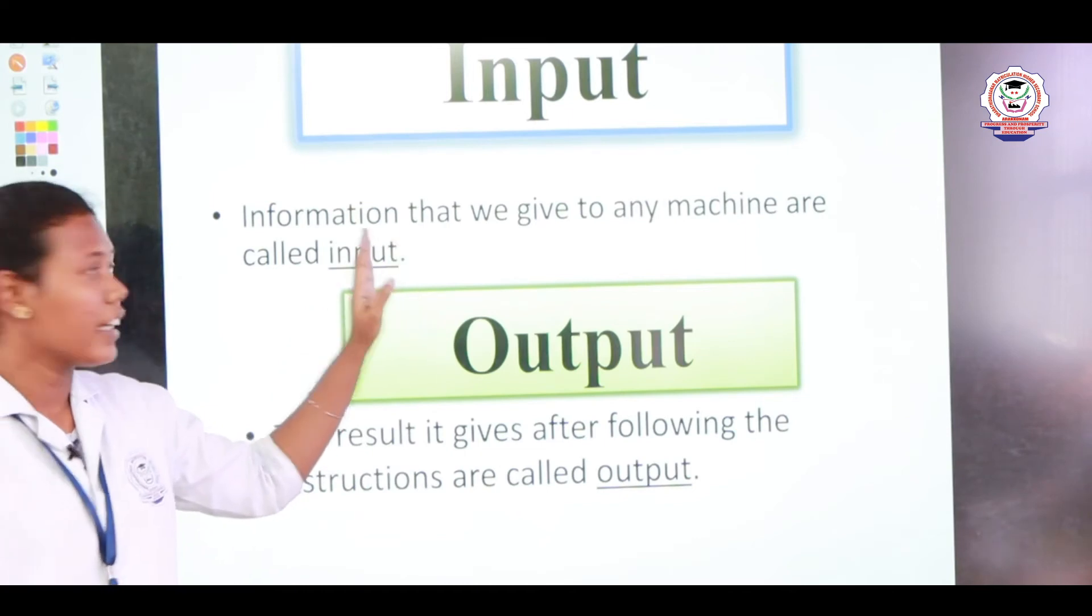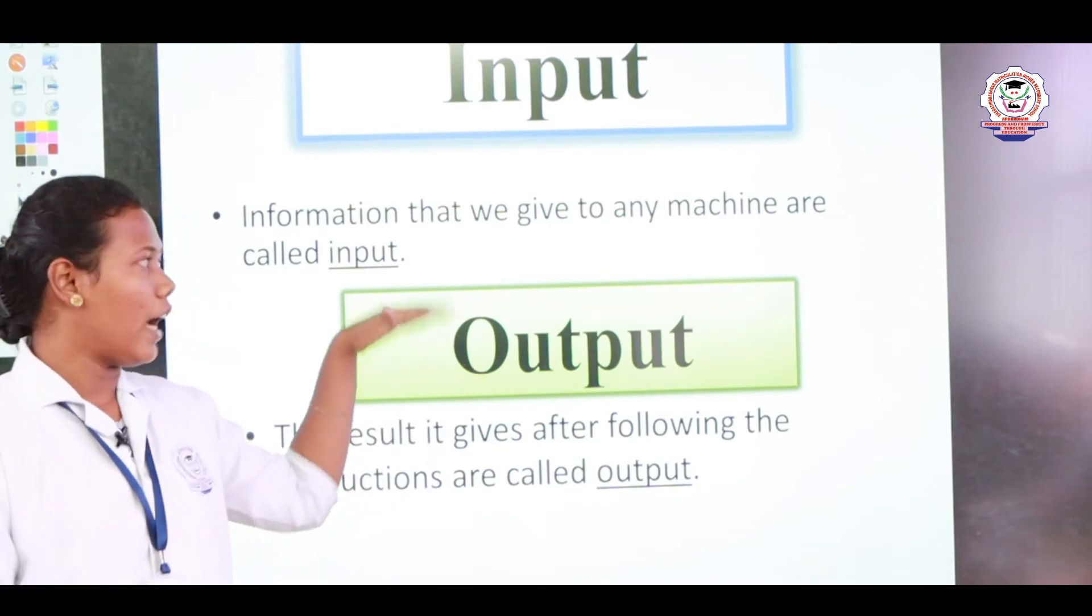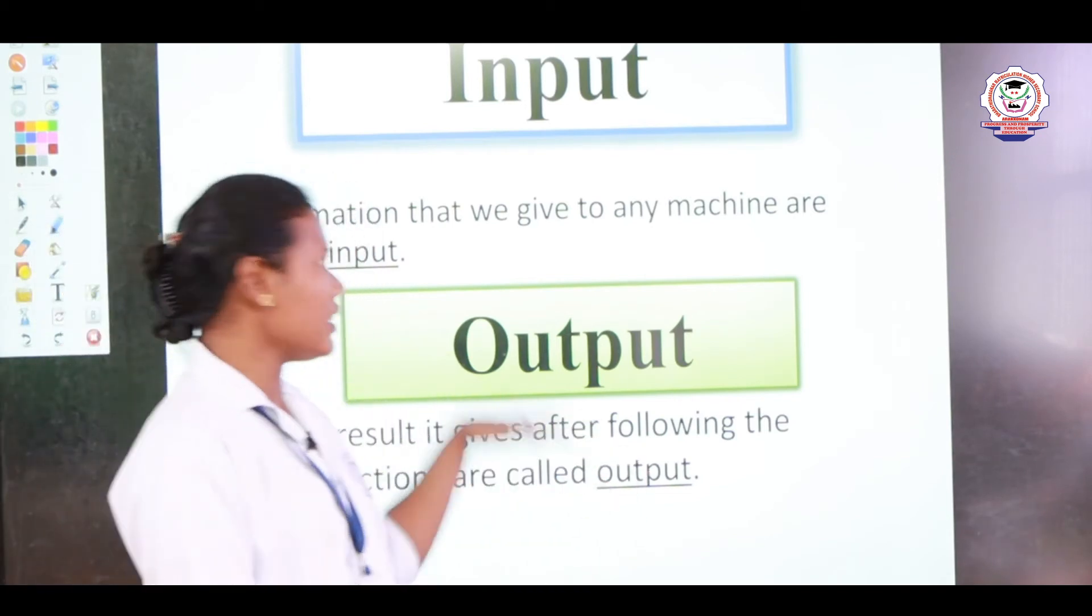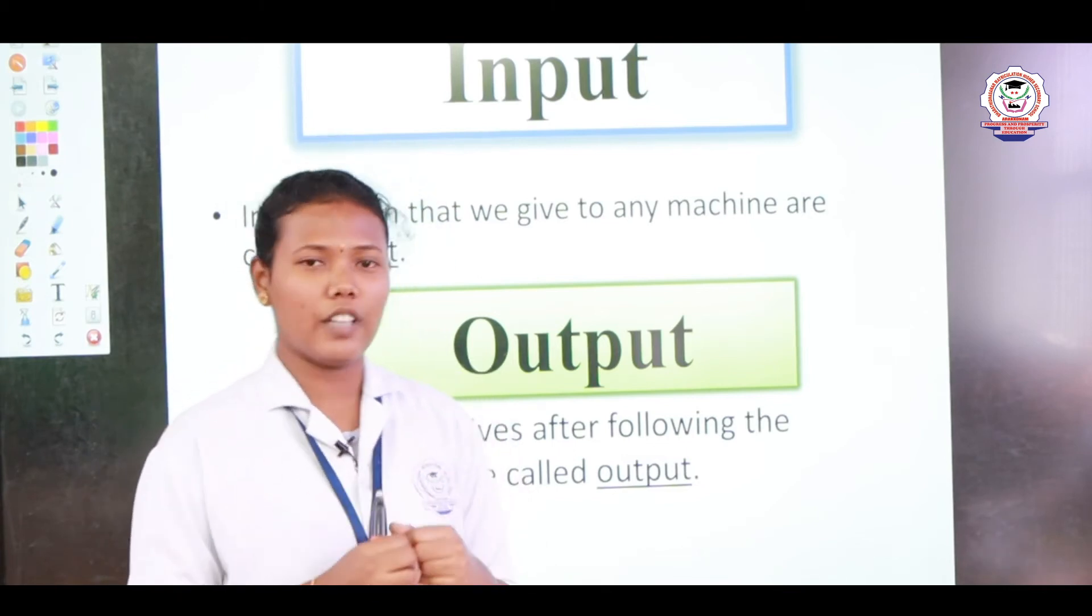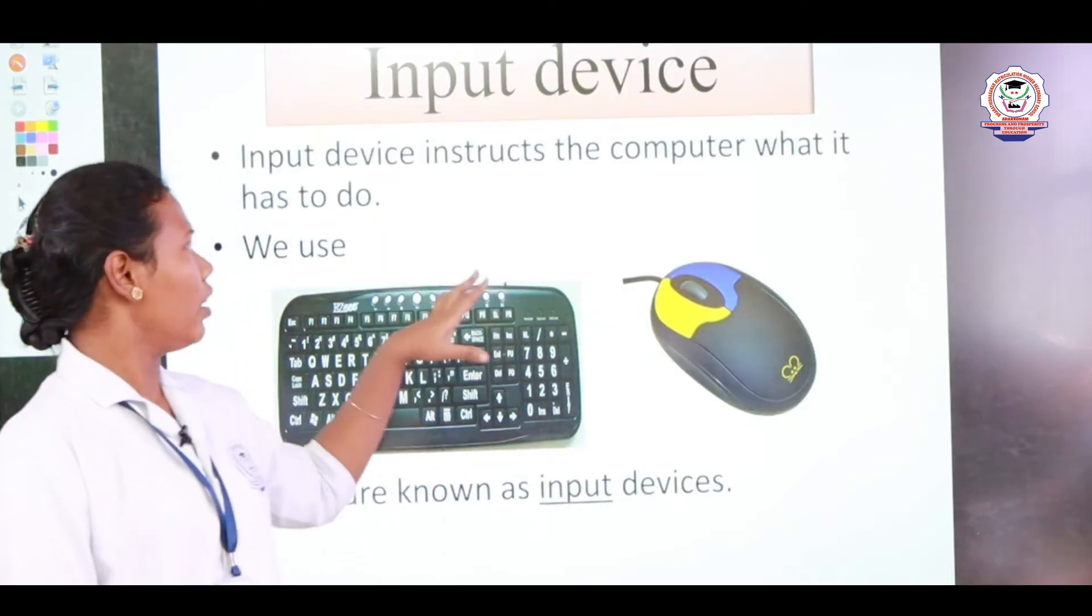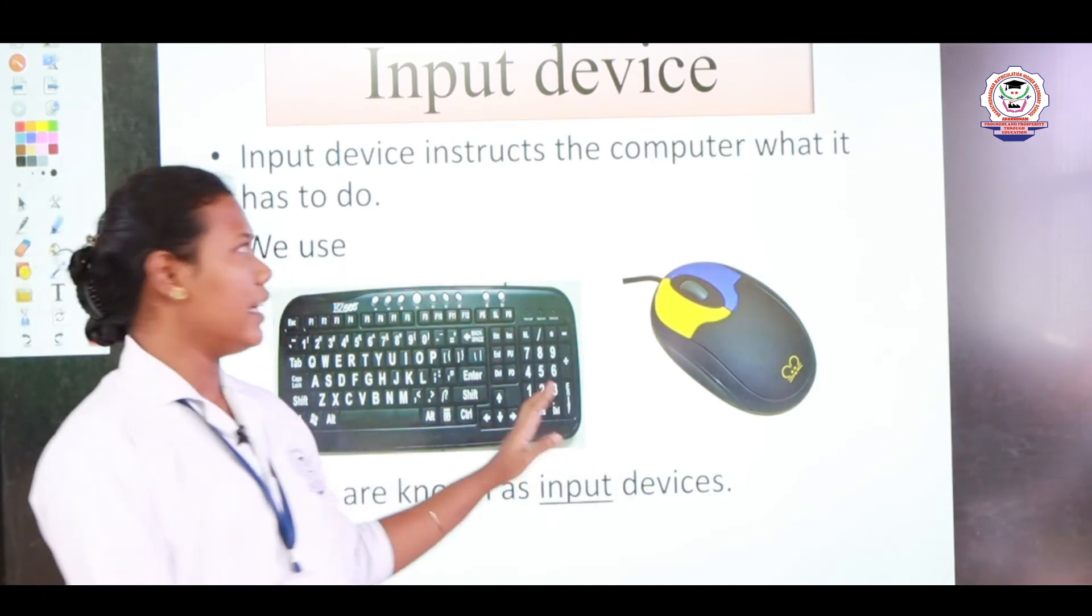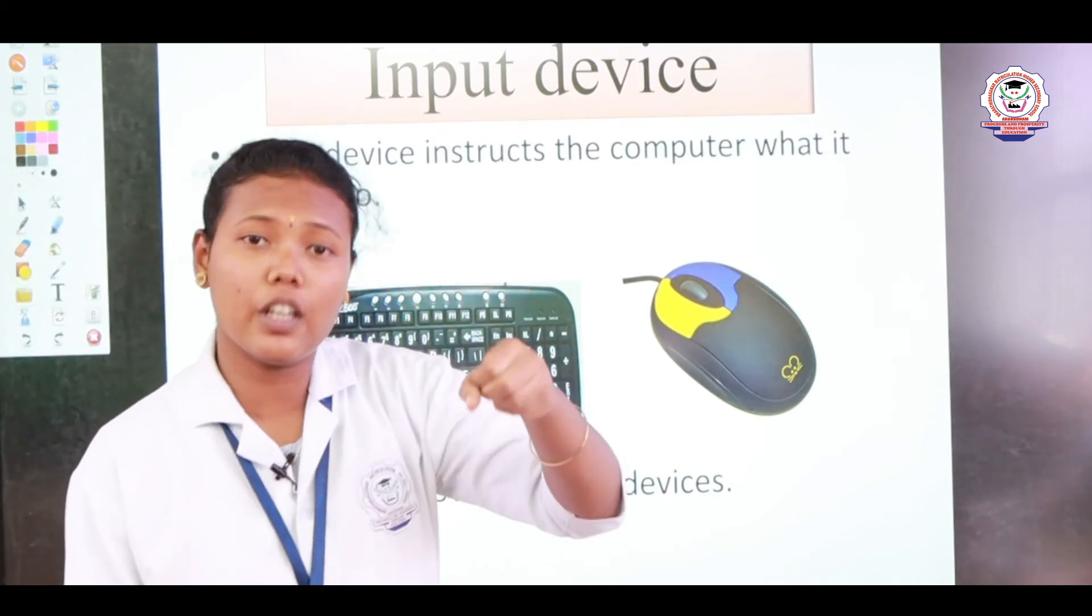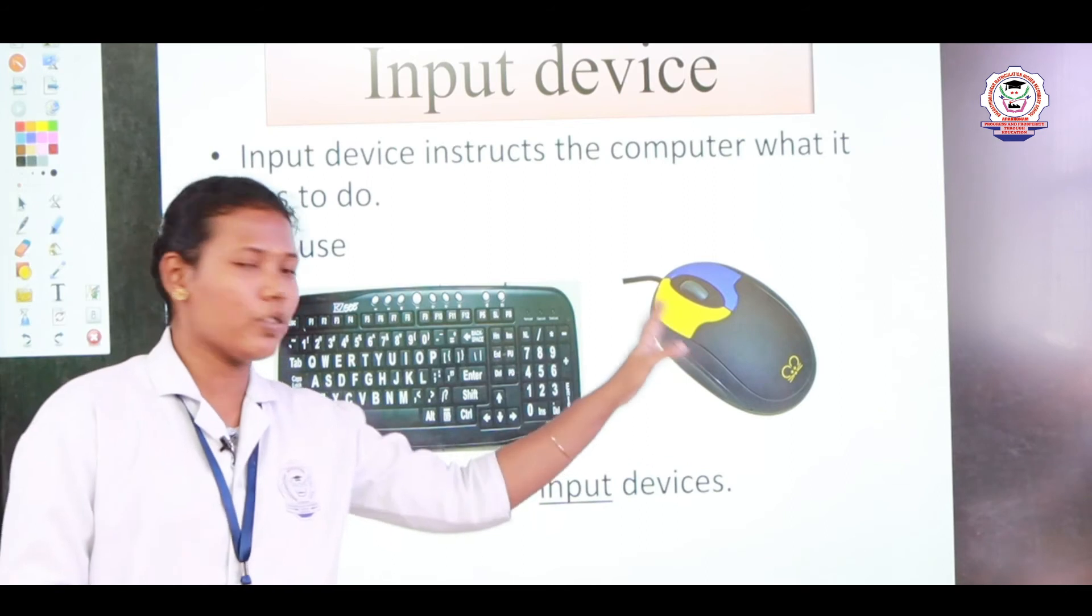So the information given to the machine is called input. After this information, we get a result, and that is called output. With this input and output, we have a few devices in our parts of the computer. Shall we see that? Here there is an input device. Input device instructs the computer to do what we want.